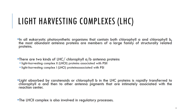The second type of protein complexes found in eukaryotic photosynthetic organisms contains both chlorophyll a and b. The most abundant antenna proteins are members of a large family of structurally related proteins. Some of these proteins are associated primarily with photosystem 2 and are called light-harvesting complex 2 proteins, also known as chlorophyll a and b antenna proteins. Light absorbed by carotenoids and chlorophyll b in these light-harvesting complex proteins is rapidly transferred to chlorophyll a and then to other antenna pigments intimately associated with the reaction center.